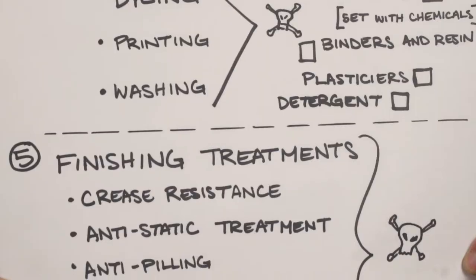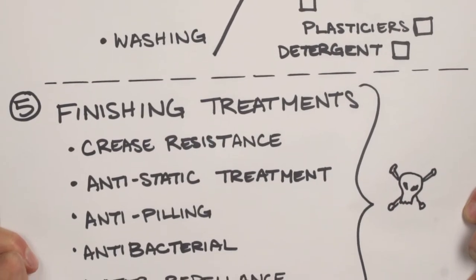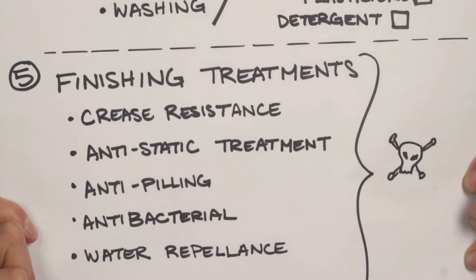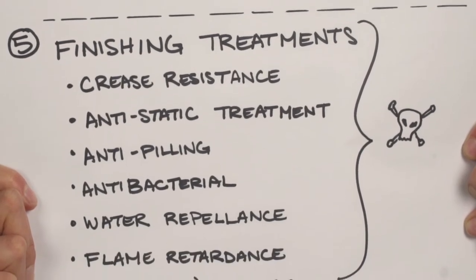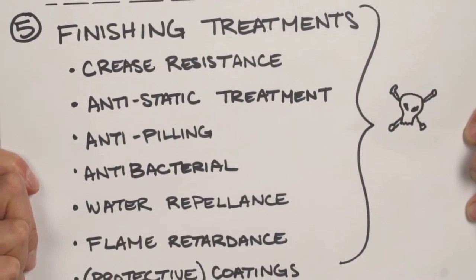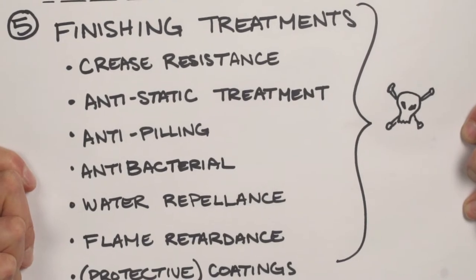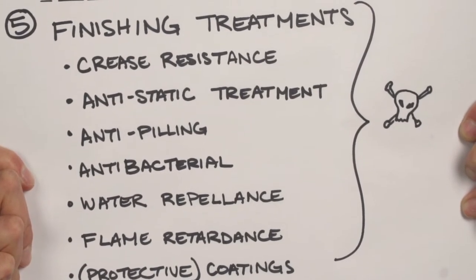Number five: finishing treatments. These are basically for all of those specialized fabrics that are crease resistant, water repellent, anti-wrinkling, anti-pilling. So there are more chemicals involved in this process as well.